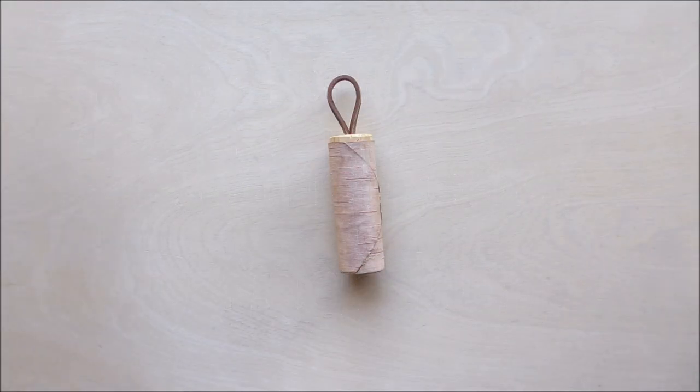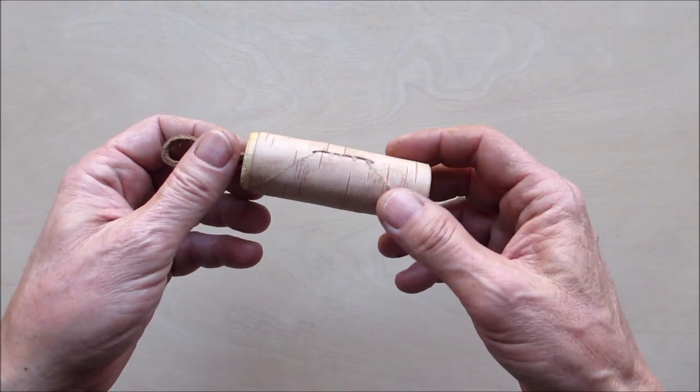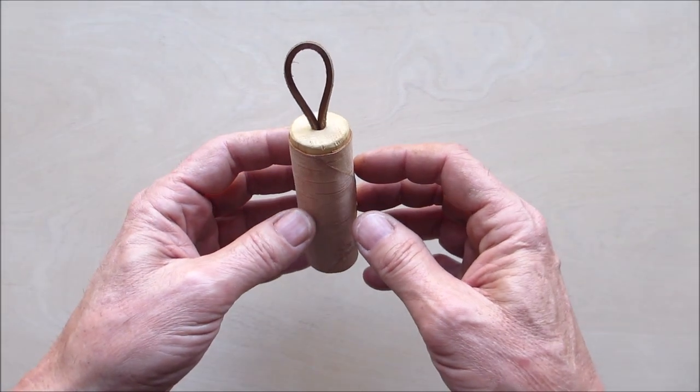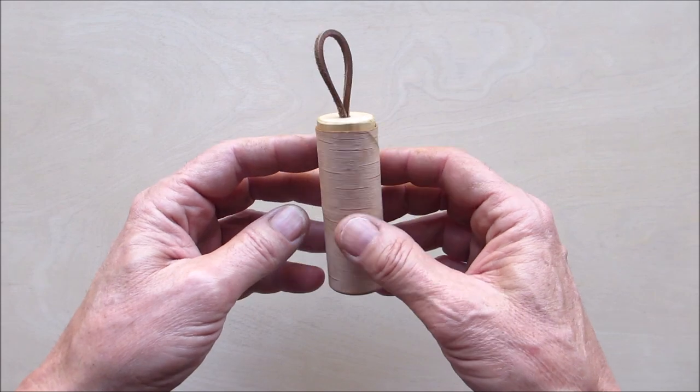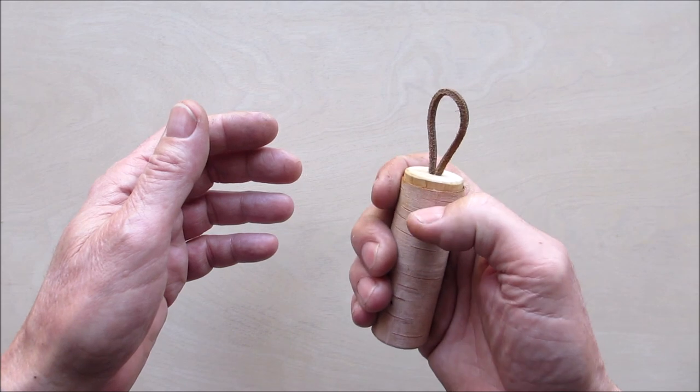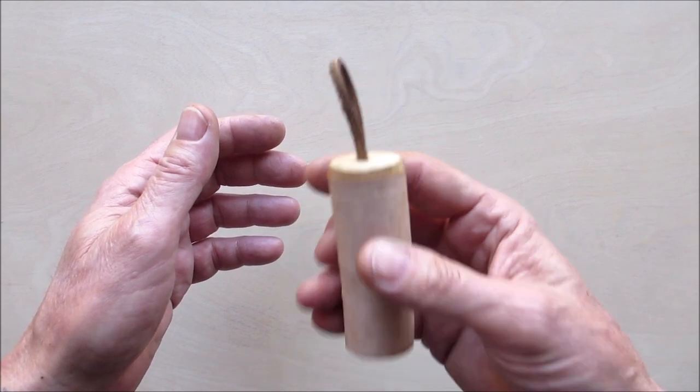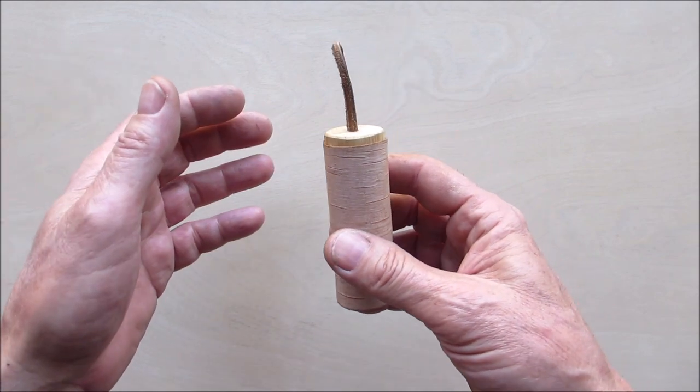Hello everyone, welcome back. You might remember this little match safe that I made from the birch bark that my brother Howard sent me over at Cabot Bluegill. I put this in my pocket and I was like, you know, it's a little too big. It's good for your pack, good to throw in there, no problem.